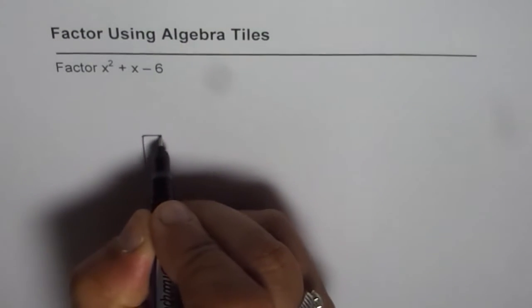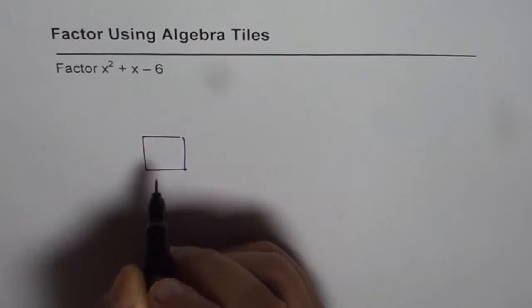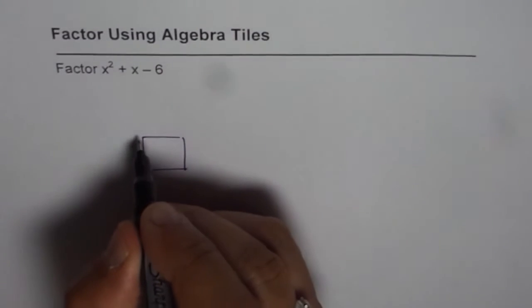Now here we have x squared. Let us draw one x squared. This is my x squared tile, and then we have x and minus 6. So if I add x to it, this is the x tile.